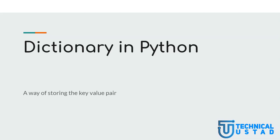First of all, we need to understand what is dictionary in Python. Dictionary is just like a data structure. Data structure is not only in Python but in any other programming language. The richness of Python comes because of its data structures. We have got list, sets, tuples, and then we have got this dictionary. All these data structures enable us to do all sorts of different things with Python.